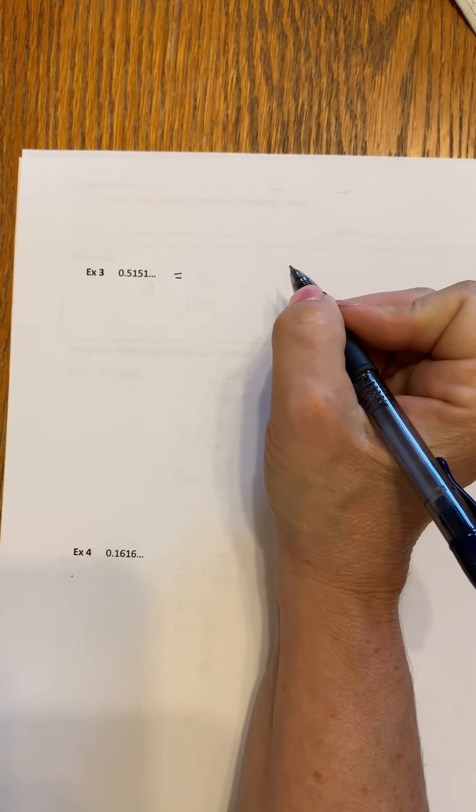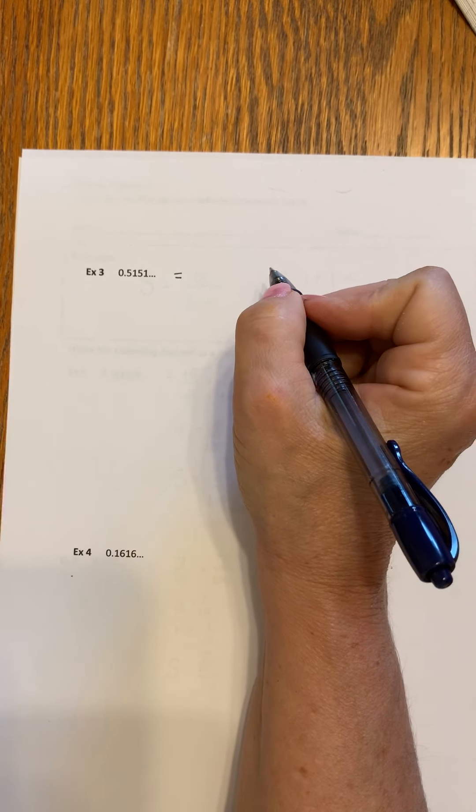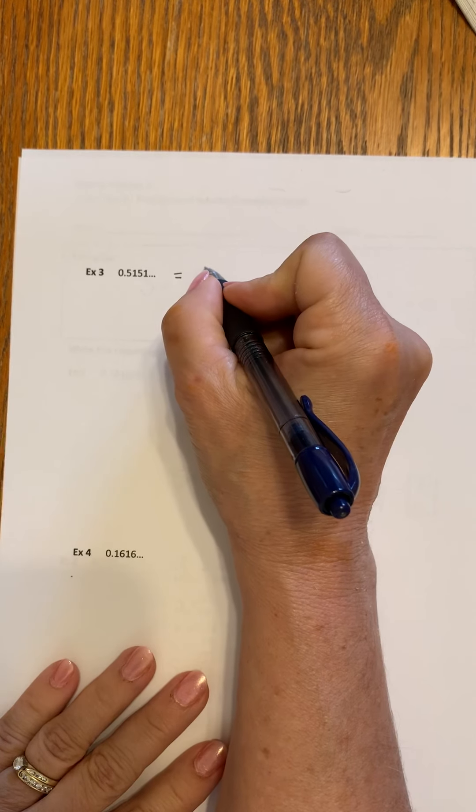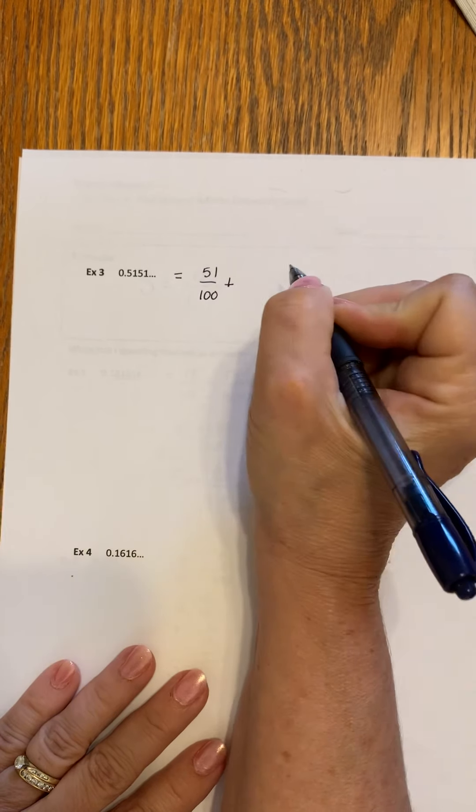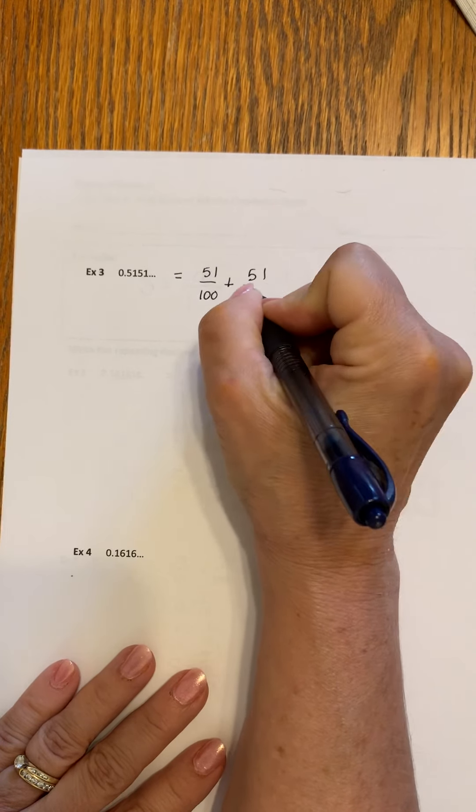We can rewrite this as 51 over 100 plus 51. Two more zeros.